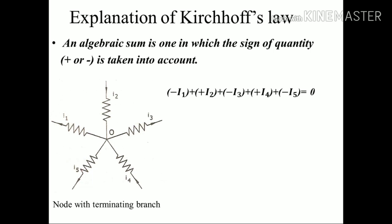We will move minus I1 minus I3 minus I5 to the right hand side, so our equation becomes I2 plus I4 equals I1 plus I3 plus I5. I2 and I4 are incoming current, and I1, I3, and I5 are outgoing current.